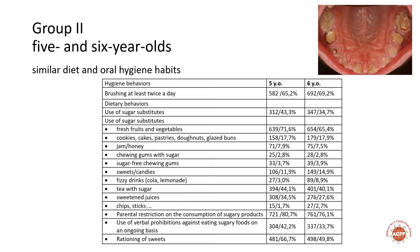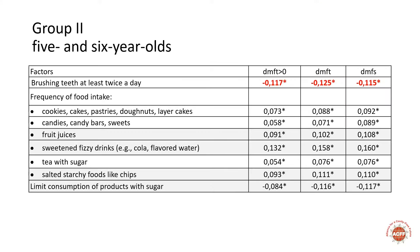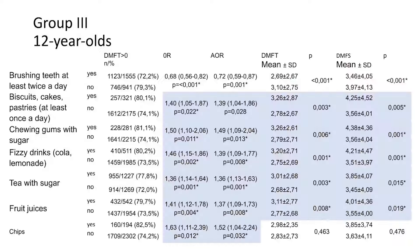The second group included children aged 5 and 6, and as you can see, the health behaviors of 5 and 6-year-olds are similar. Our statistical analysis shows that caries risk factors are very similar to the younger group. We introduced hygienic behaviors as a confounding factor in the evaluation of the influence of eating habits on the prevalence and level of dental caries. Oral hygienic behaviors only slightly reduced the negative impact of sugar on the teeth.